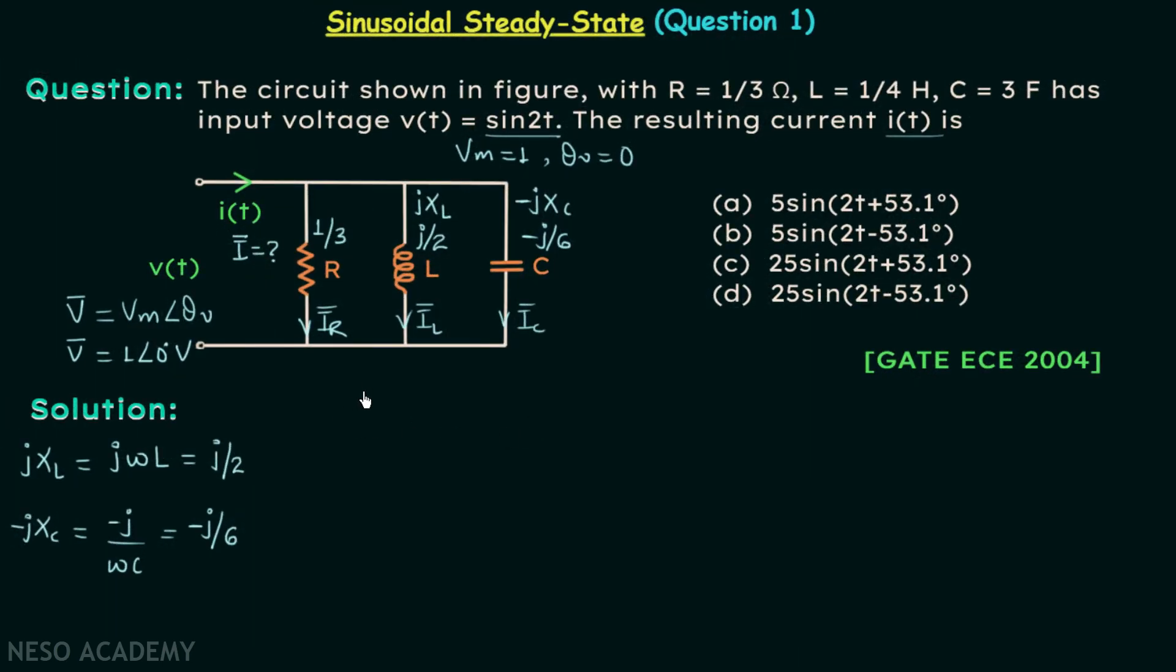And we can safely say that I phasor is equal to IR phasor plus IL phasor plus IC phasor. I phasor we are required to find out. In place of IR phasor we can have V phasor divided by the resistance which is 1/3.